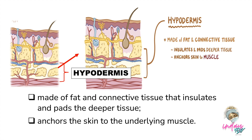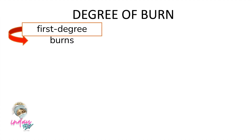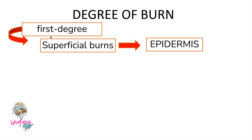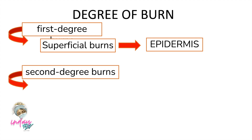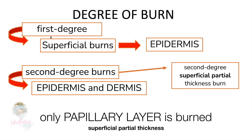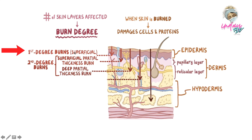When the skin is burned, it damages cells and the proteins within them. The number of skin layers affected determines the burn degree. In first degree or superficial burns, only the epidermis is affected. In second degree burns, the epidermis and dermis are both affected. If only the papillary layer is burned, it is a second degree superficial partial thickness burn. If the burn reaches the deeper reticular layer without extending through the entire layer, it is a second degree deep partial thickness burn.